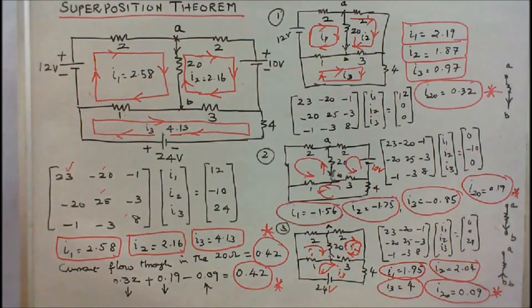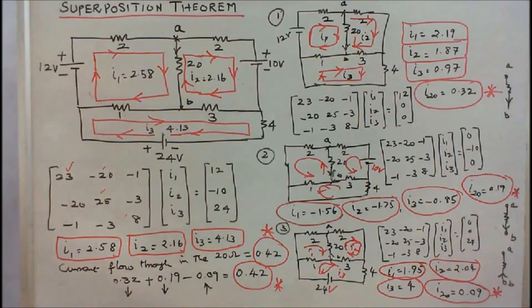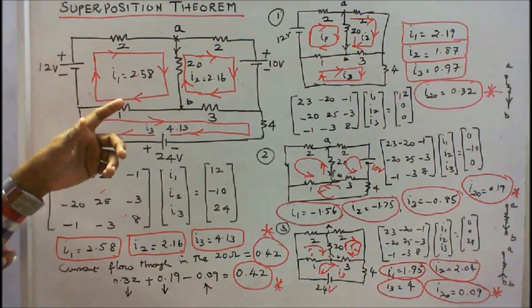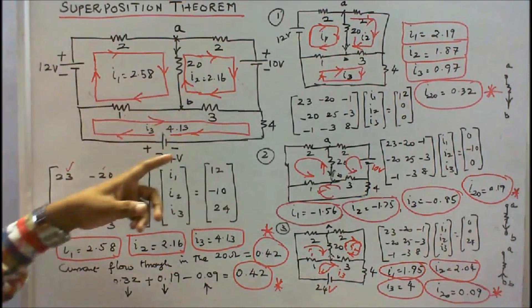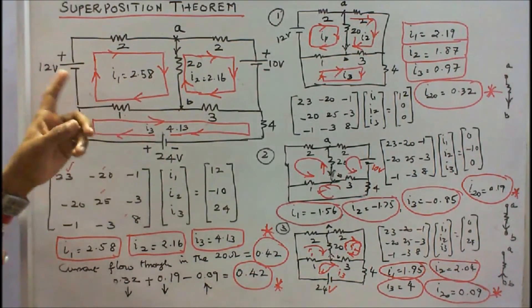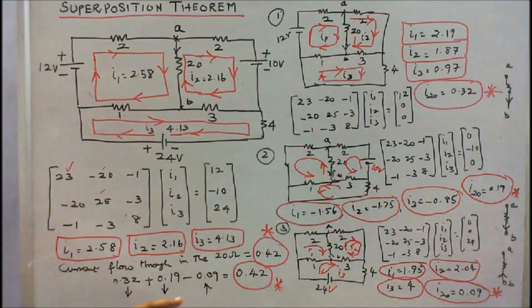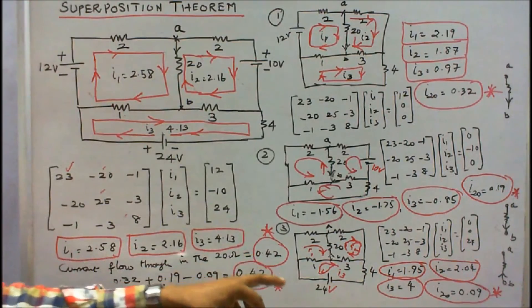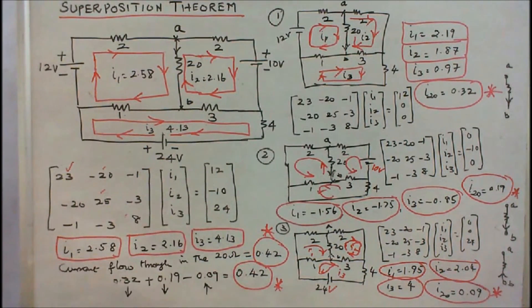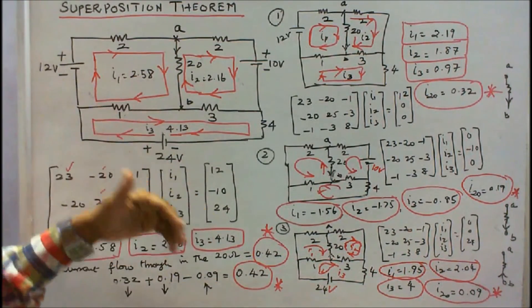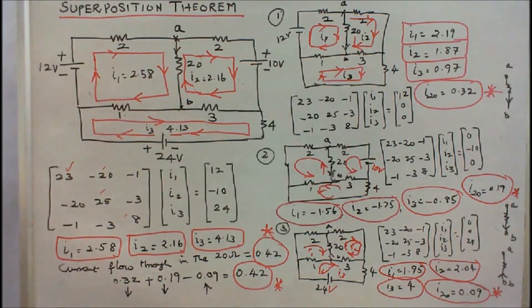Therefore, the total current through the 20-ohm resistor by superposition is 0.32 + 0.19 − 0.09 = 0.42 A. By the loop method with all sources active, the current is also 0.42 A. By superposition: 12V gives 0.32 A, 10V gives +0.19 A, and 24V gives −0.09 A, totaling 0.42 A. Hence, the superposition theorem is verified.